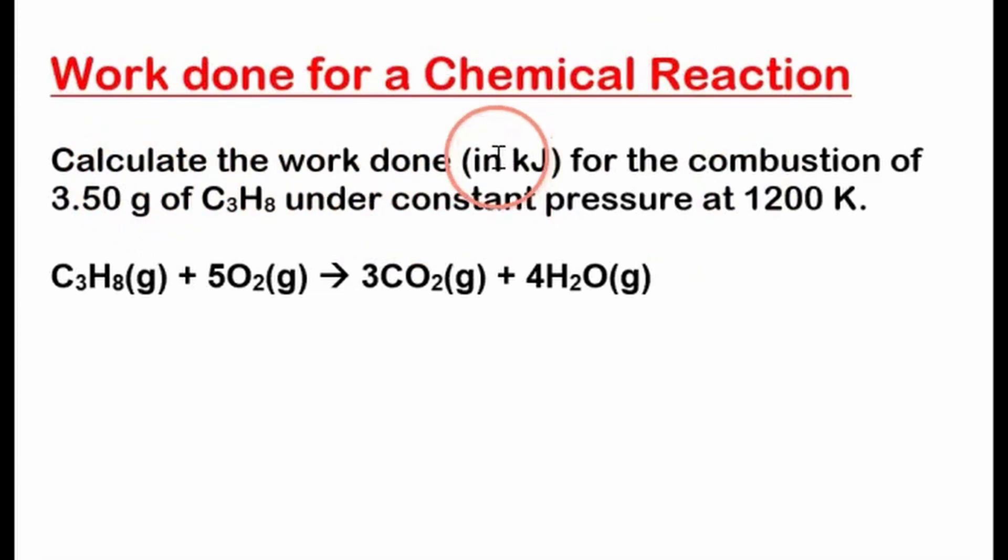And this is the exam problem right here. Calculate the work done in kilojoules for the combustion of 3.50 grams of C3H8, this is propane, under constant pressure at 1200 Kelvin. And we don't know what the pressure is. So this is a number we don't know. And we're not given a pressure, we're given a temperature. And they do this sometimes in problems.